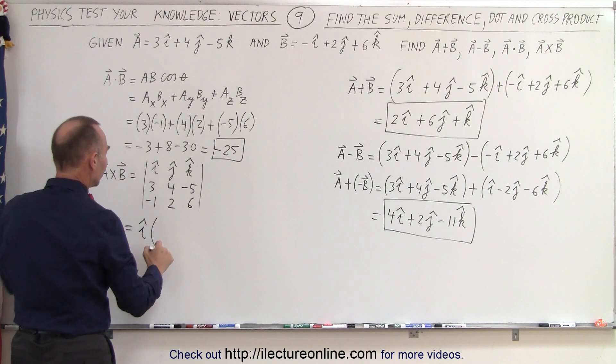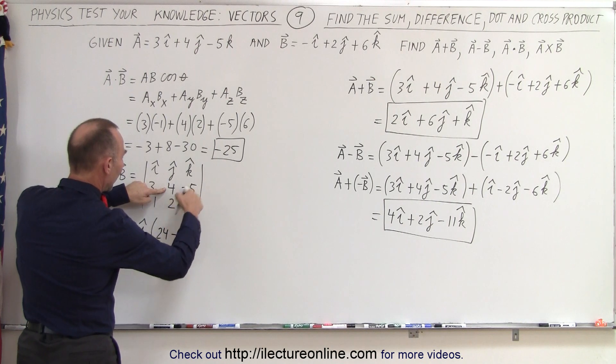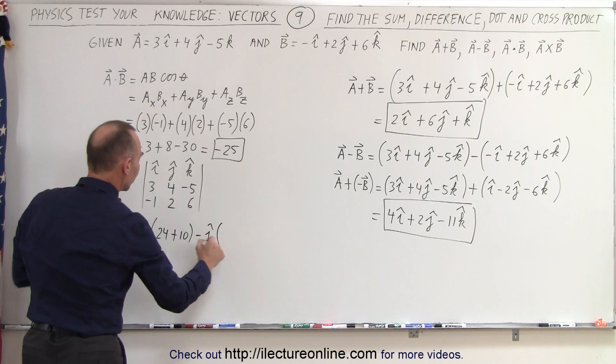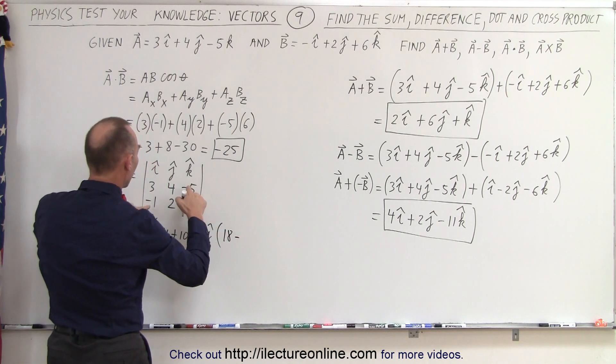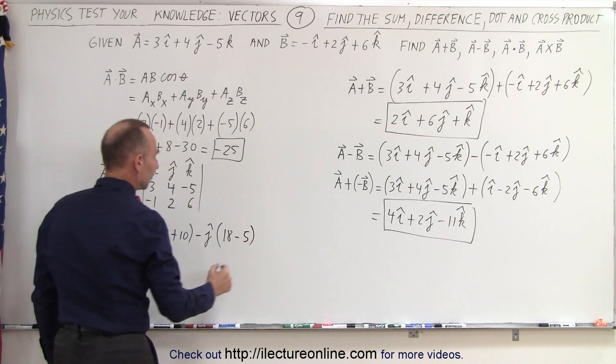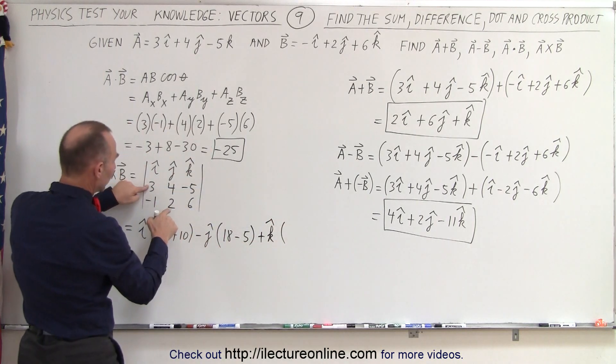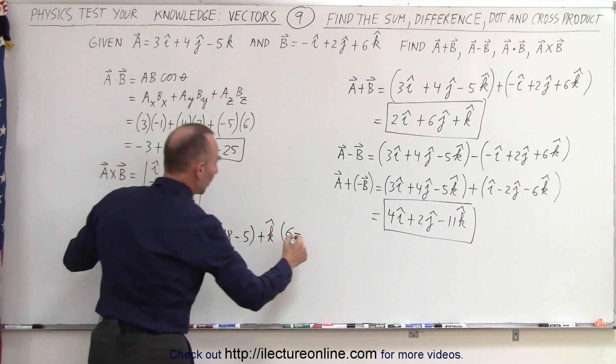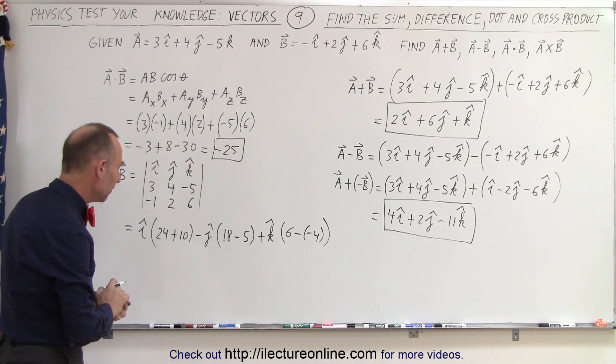This becomes 4 times 6, which is 24, minus a minus 10, which becomes a plus 10, minus j. Remember, we alternate signs, times 3 times 6, which is 18, minus a minus 1 times a minus 5. That's a plus 5. Let's subtract. It would be minus 5. And finally, plus k times would be 3 times 2, minus a negative 1 times 4. That would be a plus 4 or a negative 4, like this. Let's go ahead and write it like that so we can see where it came from.